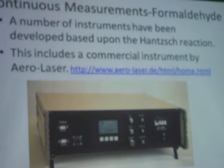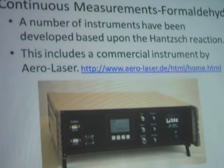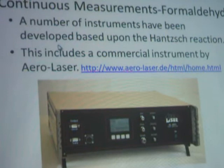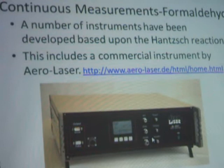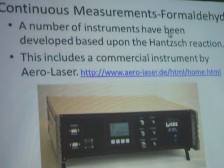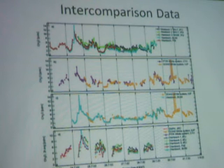The other continuous approaches for measuring carbonyl compounds are mostly just for looking at one carbonyl compound: formaldehyde. There is a commercial analyzer for making continuous measurements of formaldehyde. There's a version with a built-in sub-atmospheric sampling line which also measures water. It uses a derivatization reaction and fluorescent detection. This technique is used quite a bit in Germany.